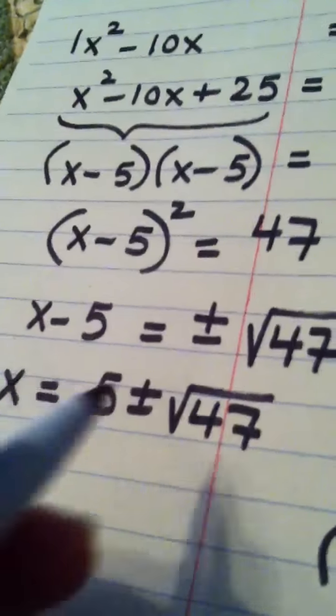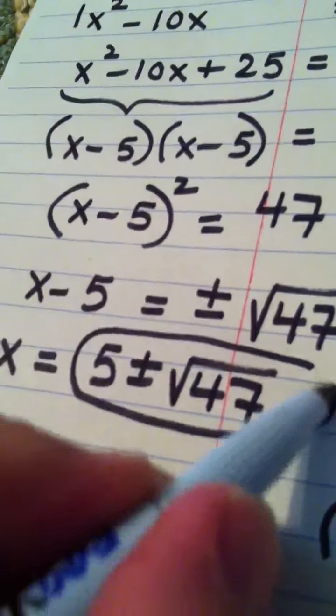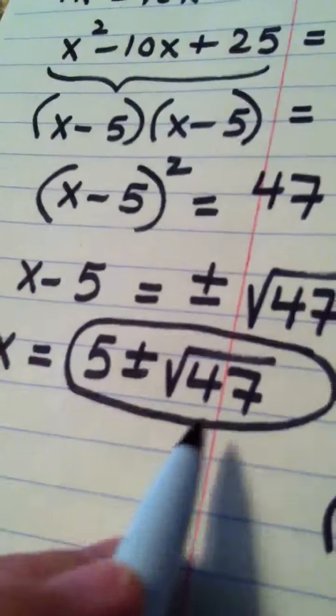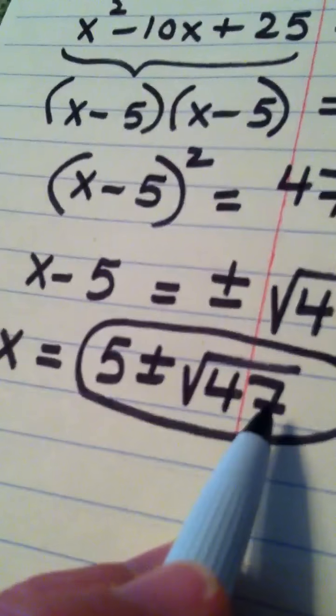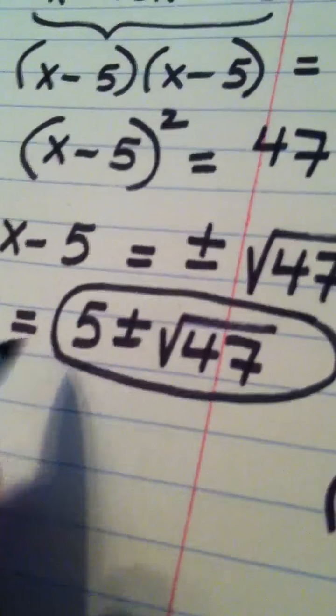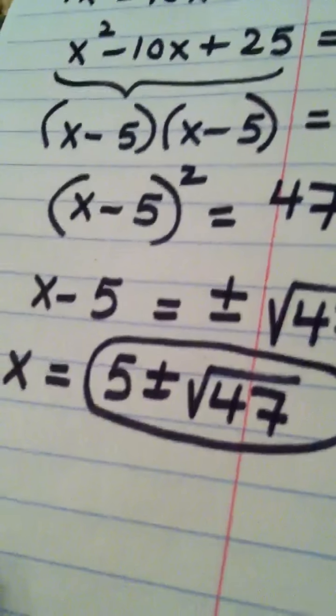And that is as far as we can go because this 47 cannot be broken up into good and junk. There's no perfect square that comes out of that. And remember how Course Compass is, sometimes they ask you